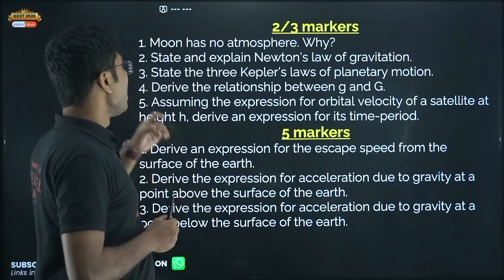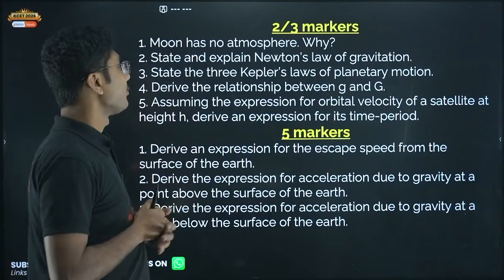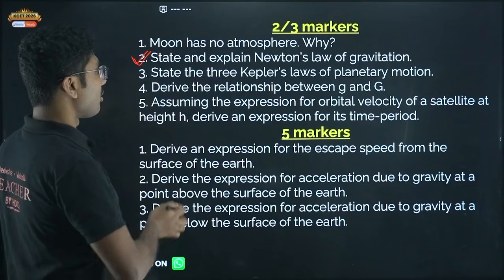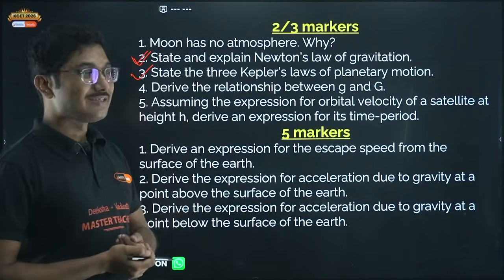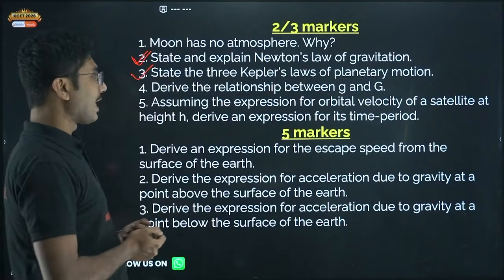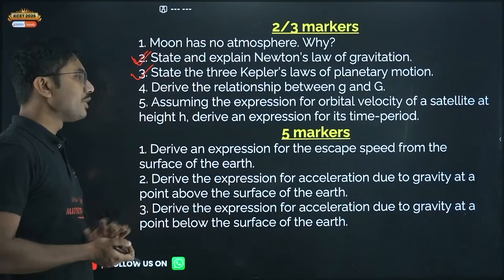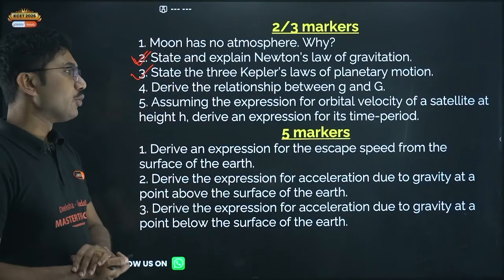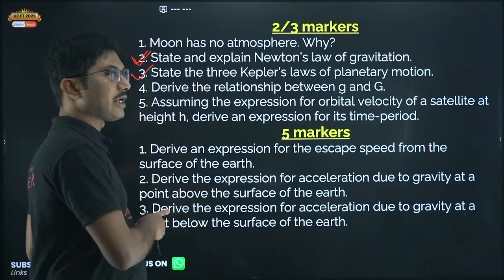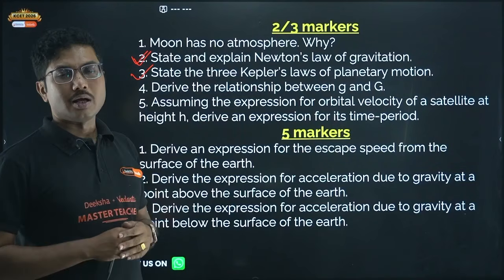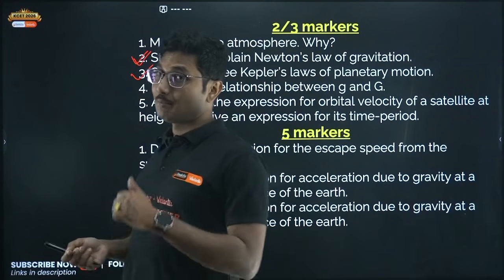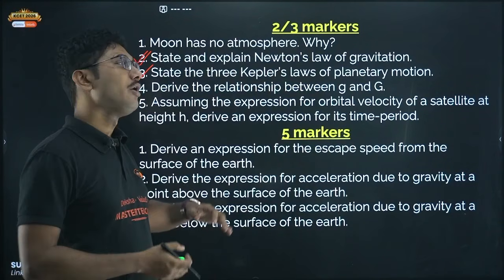Important questions from Gravitation: Why does the moon have no atmosphere? State and explain Newton's law of gravitation — very important. State Kepler's three laws of planetary motion. Derive the relationship between small g and capital G. Assuming the expression for orbital velocity of a satellite at height h, derive the expression for its time period. A five marker numerical will definitely come from this chapter.